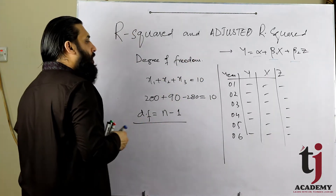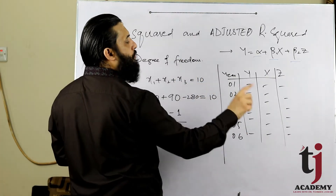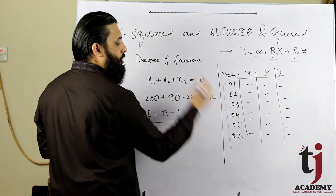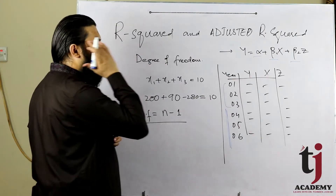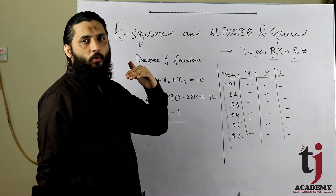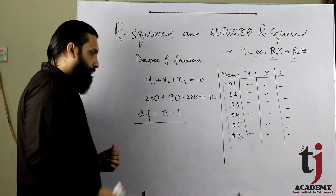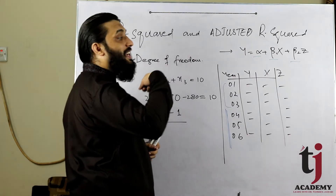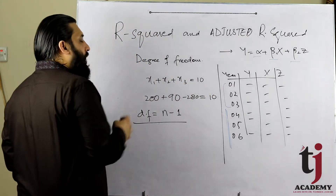جتنے observations آپ کے پاس موجود ہیں اس میں سے minus کر دیں وہ اتنی number جتنے آپ کو estimate کرنا ہے، جیسے آپ یہ 3 values estimate کرنی ہیں تو 3 نکال دیں، تو remaining 3 بچتے ہیں۔ یہ آپ کے پاس degree of freedom ہے۔ Regression میں یہ بات ذہن میں رکھیں کہ جتنے زیادہ number of observations ہوتے ہیں prediction اتنی بہتر ہوتی ہے، forecasting اتنی اچھی ہوتی ہے۔